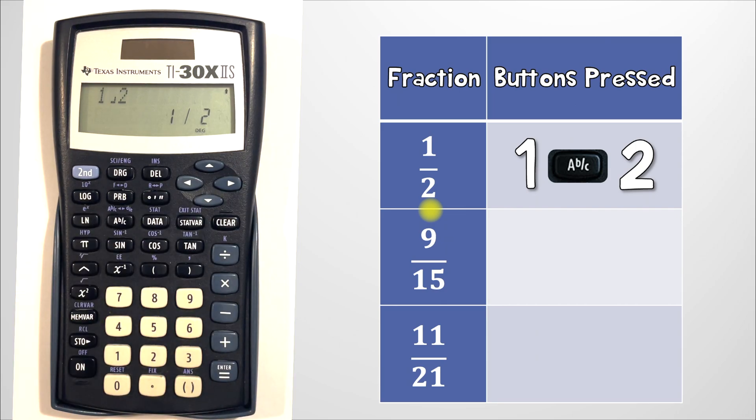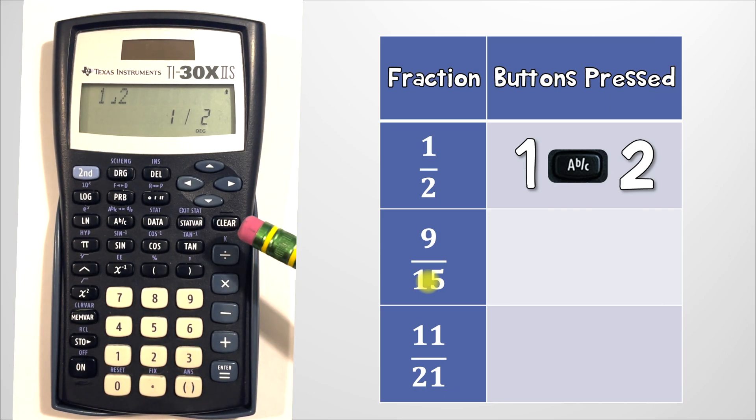Let's try the next example 9 over 15. So we'll clear our calculator, we'll go to this clear button here and now we'll go to 9 over 15. The first thing we'll press is the number 9.